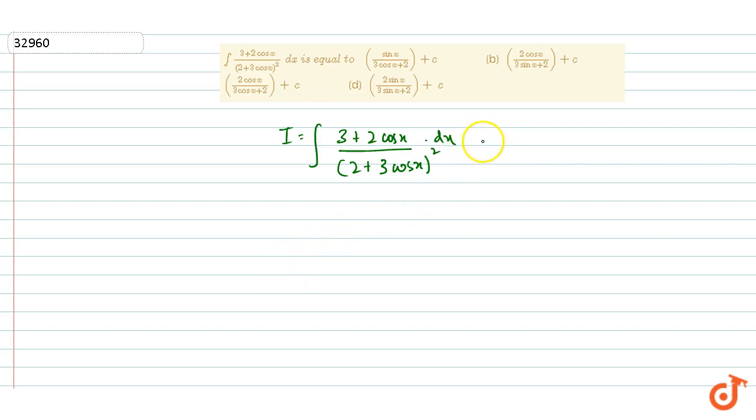Now for solving this, we'll multiply and divide by cosec²x. Cosec²x is 1/(sin²x). So we have 3cosec²x + 2cotx·cosecx in the numerator.